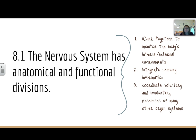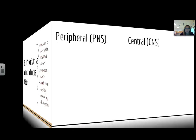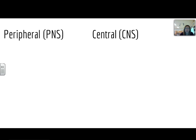What the nervous system actually does is monitor the body's internal and external environments, integrate sensory information, and coordinate voluntary and involuntary responses of many other organ systems due to that sensory information. So it's broken down into two main divisions: the peripheral, or the PNS, and the central, or the CNS.